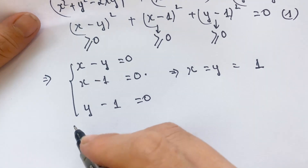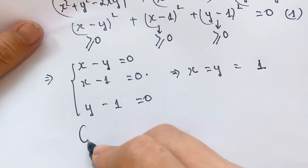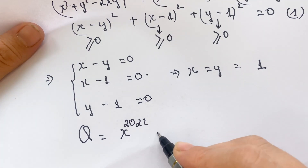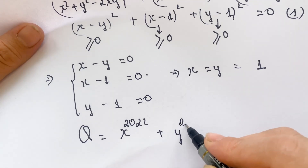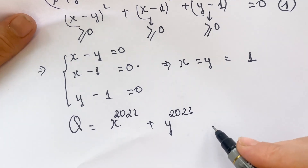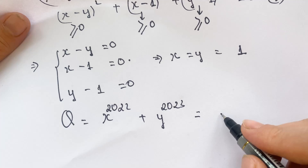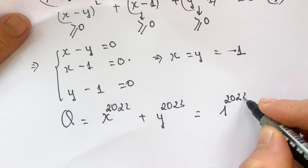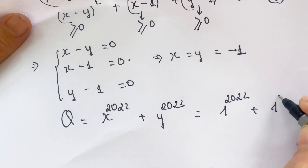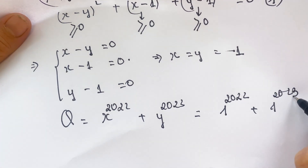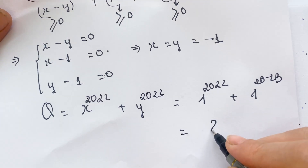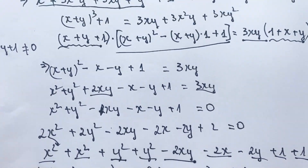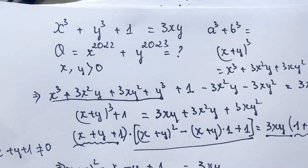So we need to calculate Q equals x to the power 2022 plus y to the power 2023. Is it easy? Yes — you need to replace: 1 to the power 2022 plus 1 to the power 2023, which equals 2. Thank you for watching my video. Don't forget to subscribe to my channel. Love you all. Bye-bye.